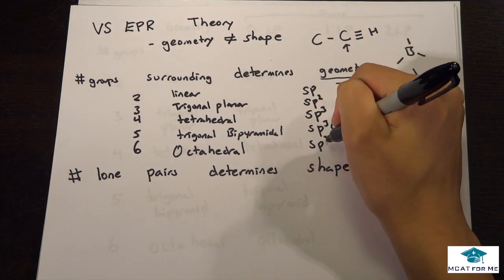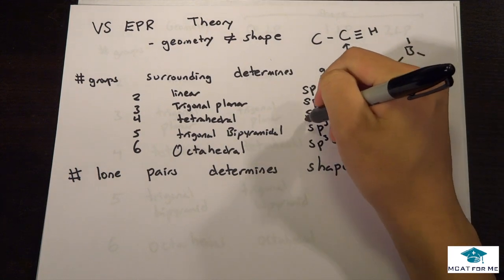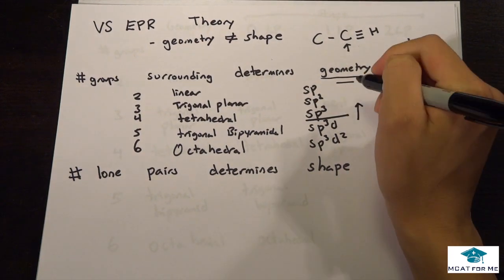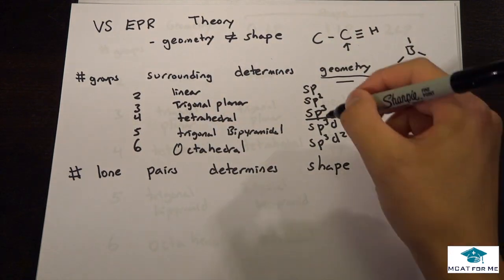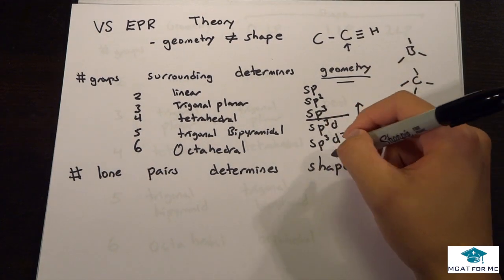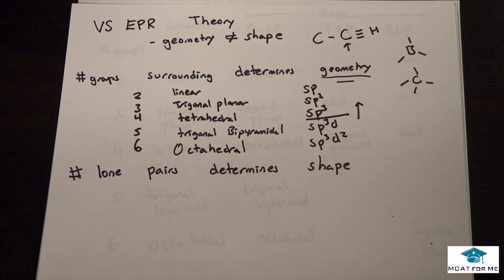Octahedral is sp3d2. And so the only ones they're going to test are these ones up there. They may ask you the geometry of those, but they'll never ask you the hybridization for these last two, but it's not hard to remember, so just kind of be familiar with that.